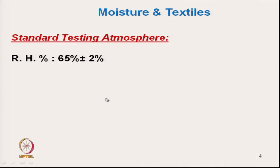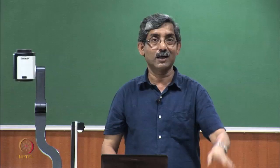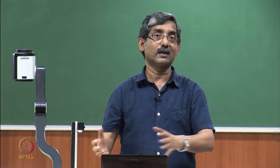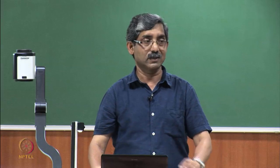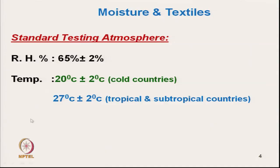If we test the textile material at higher relative humidity, all the characteristics will get affected. Throughout the world, two temperature standards are normally followed: in cold countries, 20°C ± 2°C, and in tropical and subtropical countries, 27°C ± 2°C.